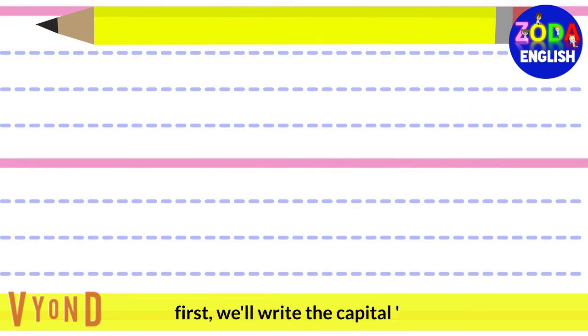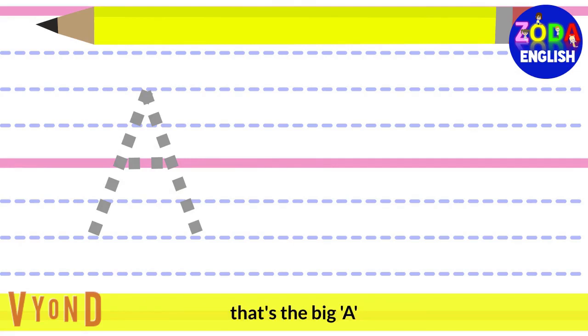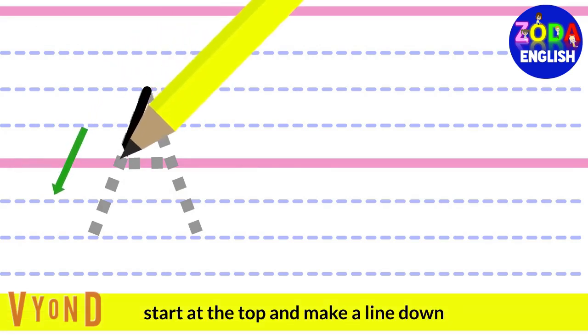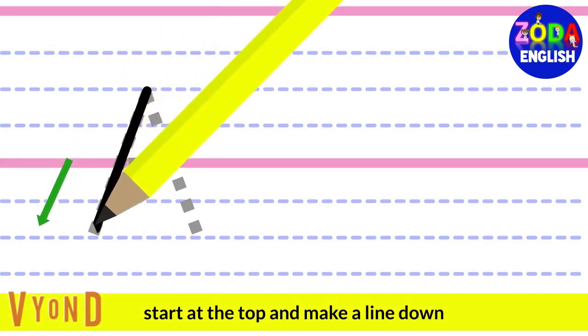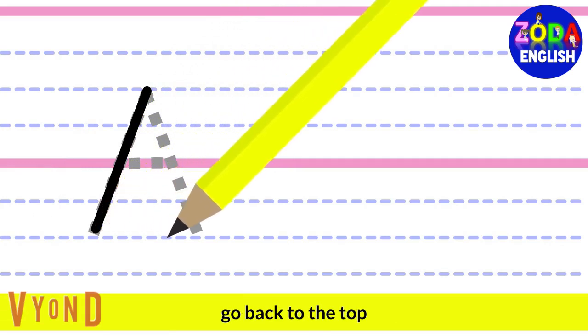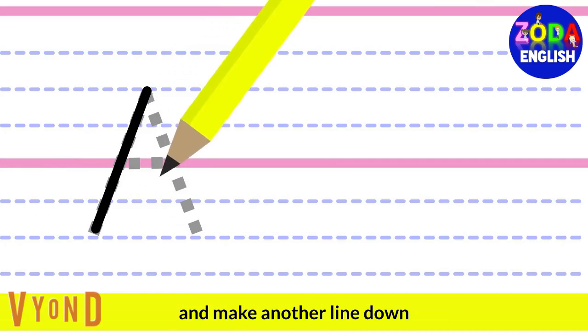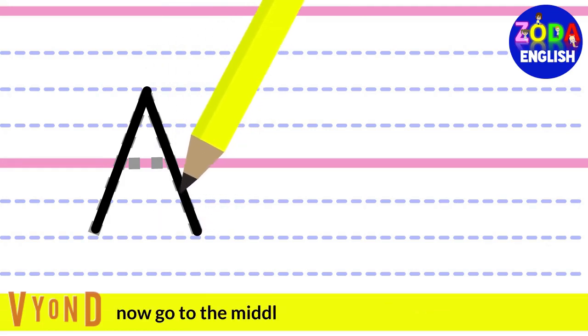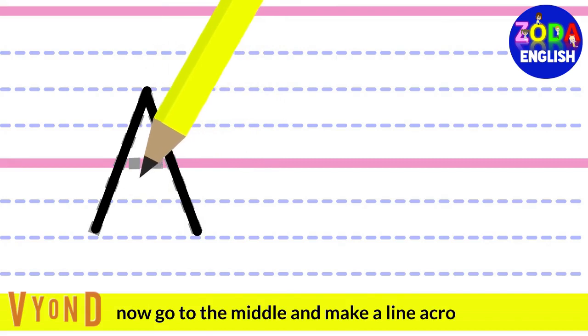First, we'll write the capital A. That's the big A. Start at the top and make a line down. Go back to the top and make another line down. Now, go to the middle and make a line across.